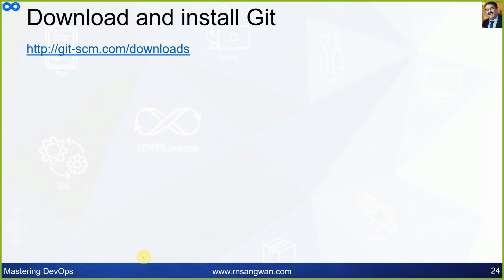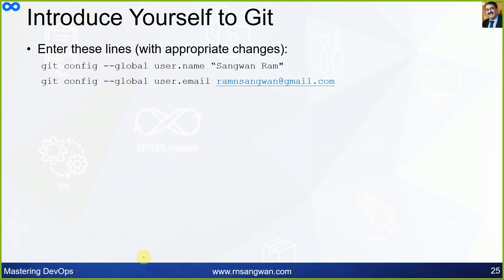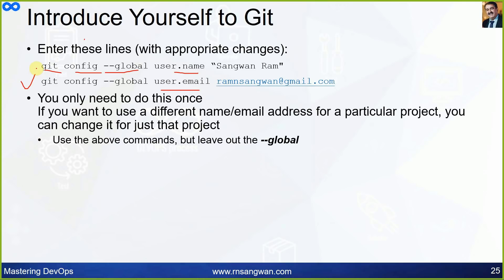To install Git on Linux, simply run 'yum install git -y' — the -y flag means do not prompt, just do the installation. After installing, introduce yourself to Git by setting global configuration: 'git config --global user.name' and 'git config --global user.email'. You only need to do this once. To use different settings for a particular project, leave out --global.